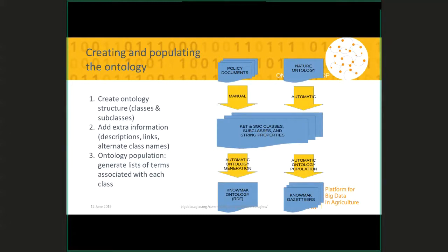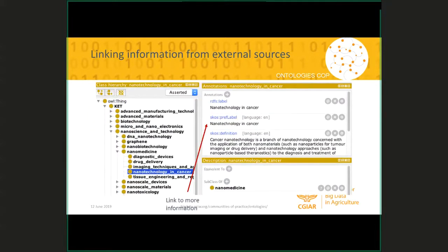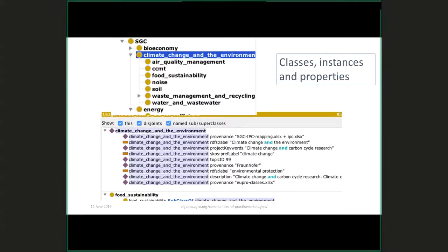We create the ontology structure with classes and subclasses, add extra information like descriptions, links, and alternative names, and then populate it with lists of terms associated with each class. Here's an example of a bit of the ontology — this is a little faceted search where you can see the structure. On the left we have the higher level classes such as energy, climate change, and bioeconomy. As you go across, we have subclasses, and associated with all these classes are sets of keywords. Here's an example showing links to further information, descriptions, and so on. We can see classes, instances, and properties — we can add whatever things we want. For the climate change and environment class, for example, we have keywords from existing project data, links to SKOS, provenance information, and descriptions of the topic.